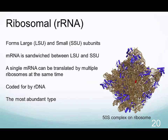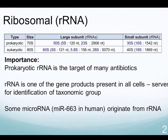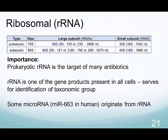This slide summarizes the differences between eukaryotic and prokaryotic ribosomal RNA. The main features to remember about ribosomal RNA are that in prokaryotes, ribosomal RNA is the target of many antibiotics and also serves as the identifier of species — specifically the 16S ribosomal RNA. Ribosomal RNA is present in all cells, and some microRNAs originate from ribosomal RNA types.